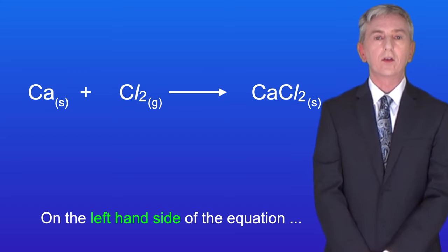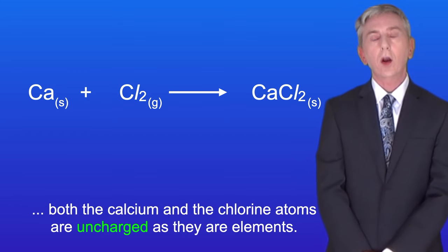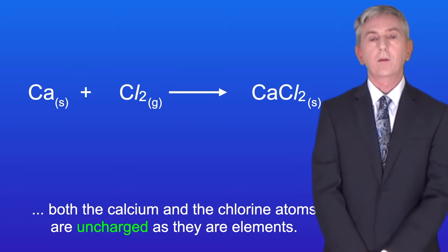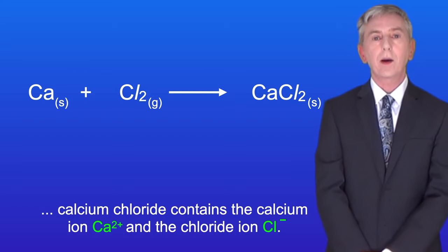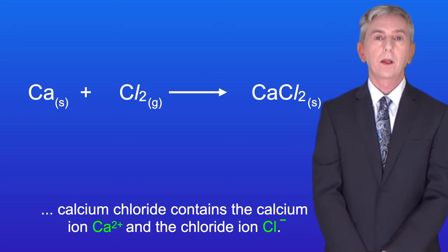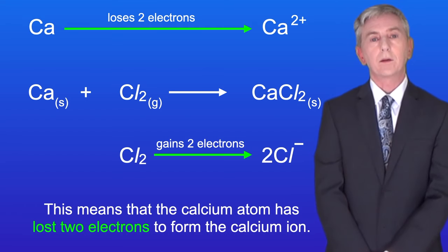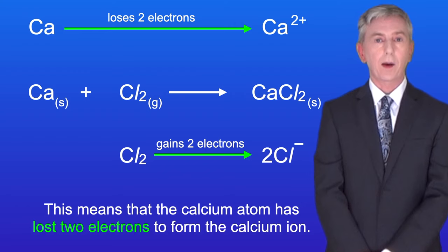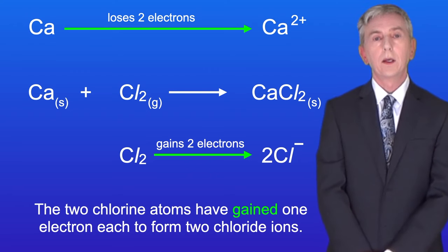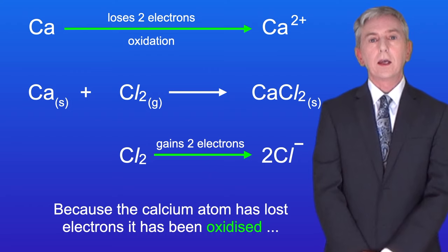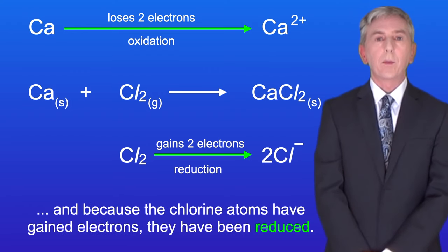On the left hand side of the equation both the calcium and the chlorine atoms are uncharged, as they are elements. On the right hand side, calcium chloride contains the calcium ion Ca²⁺ and the chloride ion Cl⁻. This means that the calcium atom has lost two electrons to form the calcium ion, and the two chlorine atoms have gained one electron each to form two chloride ions. Because the calcium atom has lost electrons it has been oxidized, and because the chlorine atoms have gained electrons they've been reduced.